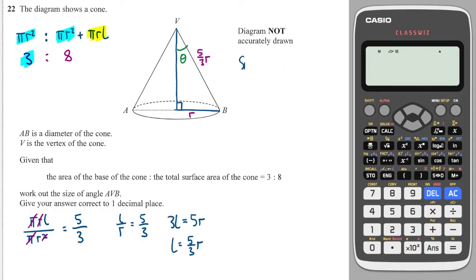So I can write that sine of theta is equal to the opposite over the hypotenuse. So that's r over 5 thirds r. And because we've got an r on the top and the bottom of this fraction, I can divide through by r. And that will leave me with just 1 on the top.